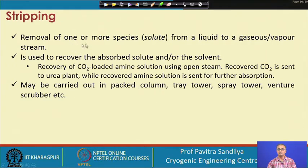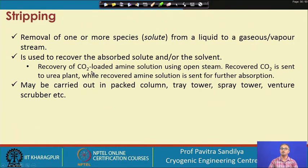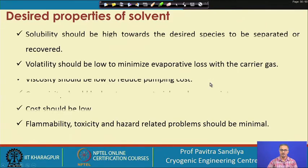Stripping is the reverse process of absorption. In stripping, one or more species (the solute) are removed from a liquid to a gaseous or vapor stream. This kind of stripping is done to recover the absorbed solute or to regenerate the solvent. For example, when absorbing CO2 in amine, to regenerate the amine and recover the CO2 we use stripping, with hot steam as the stripping agent. This may again be carried out in packed columns or tray towers.